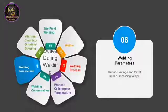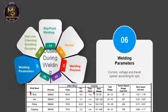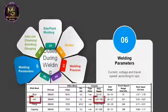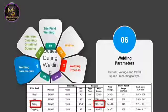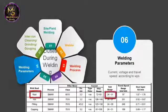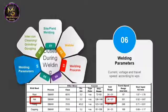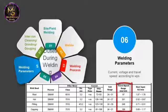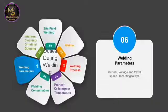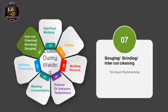Welding parameters — current, voltage, and travel speed — should be according to the WPS. In this image, current for the root pass should be within 72 to 93 amperes, 126 to 146 amperes for hot pass, 123 to 130 amperes for filling, and 81 to 106 amperes for capping. Voltage for root pass should be 24 to 31 volts, 24 to 27 for hot pass, 24 to 29 for filling, and 24 to 31 for capping.